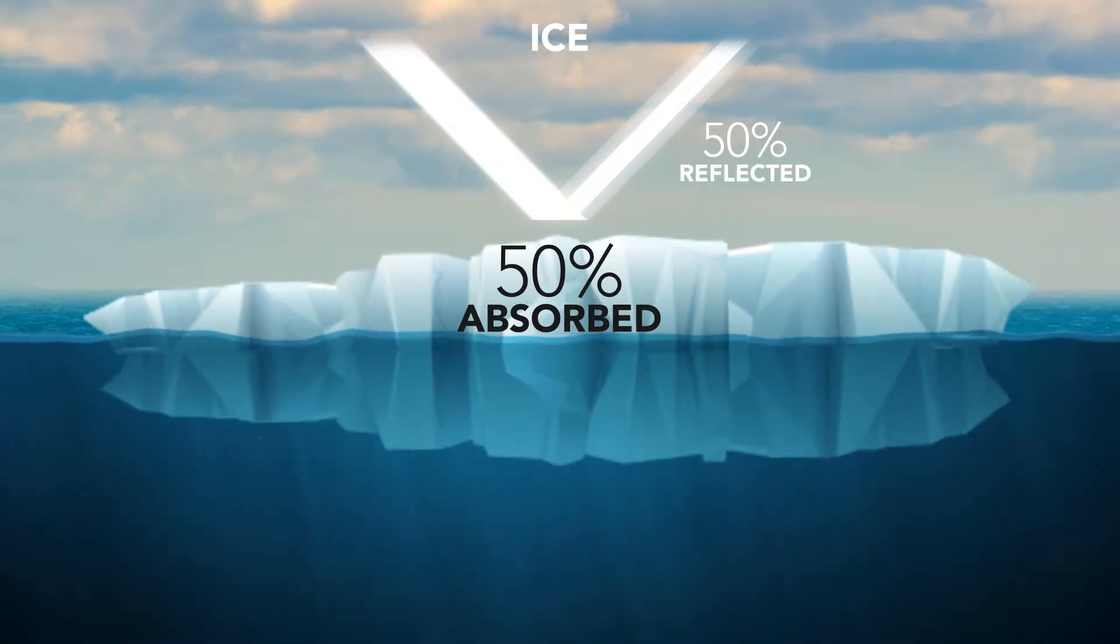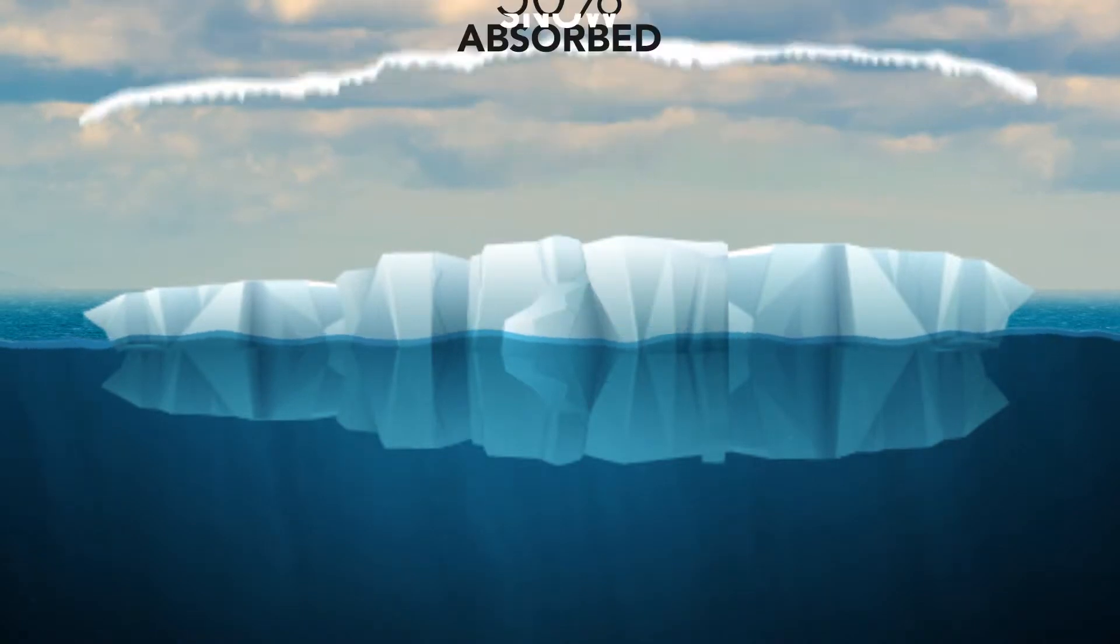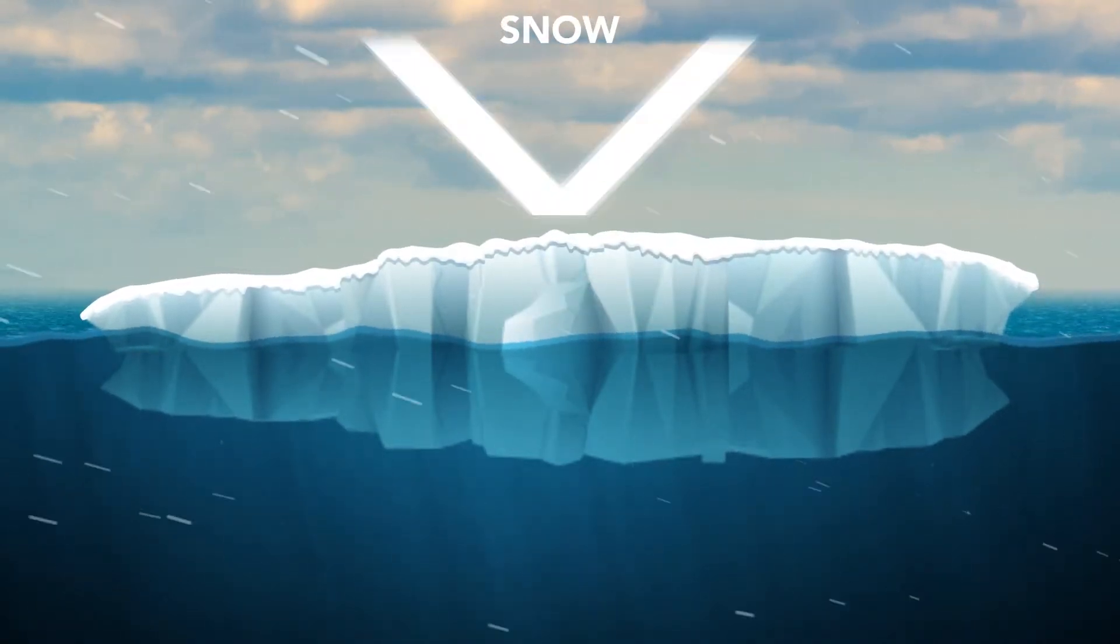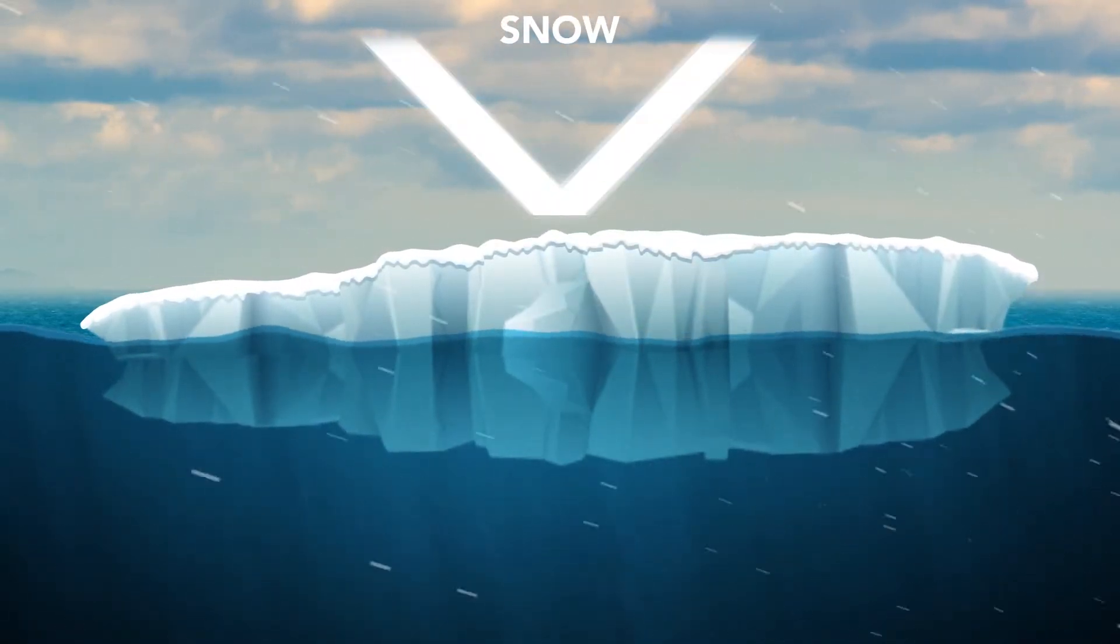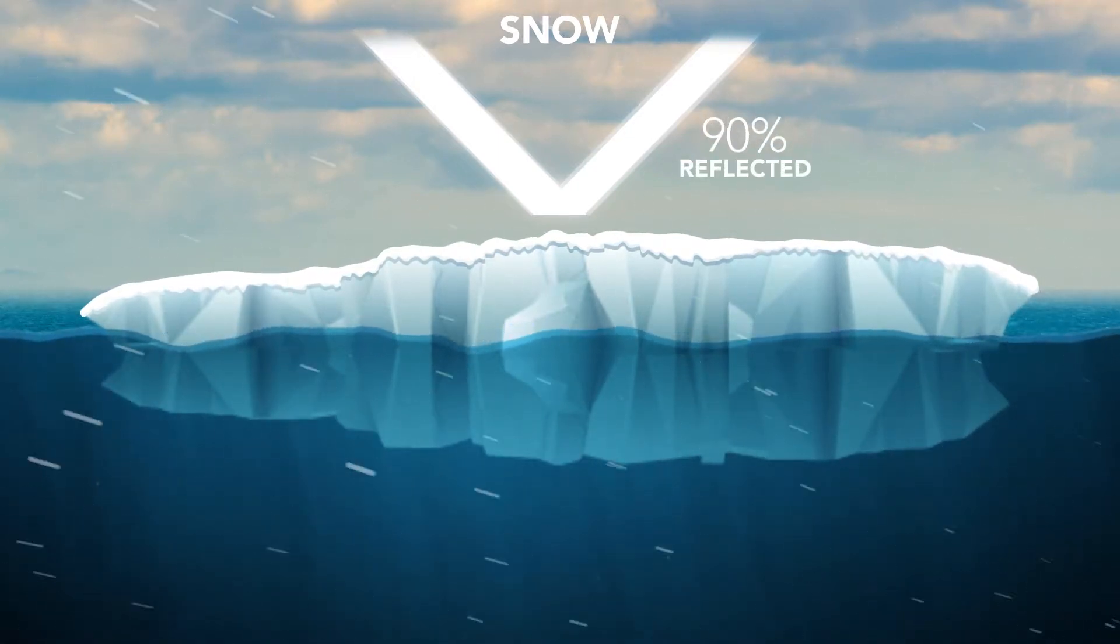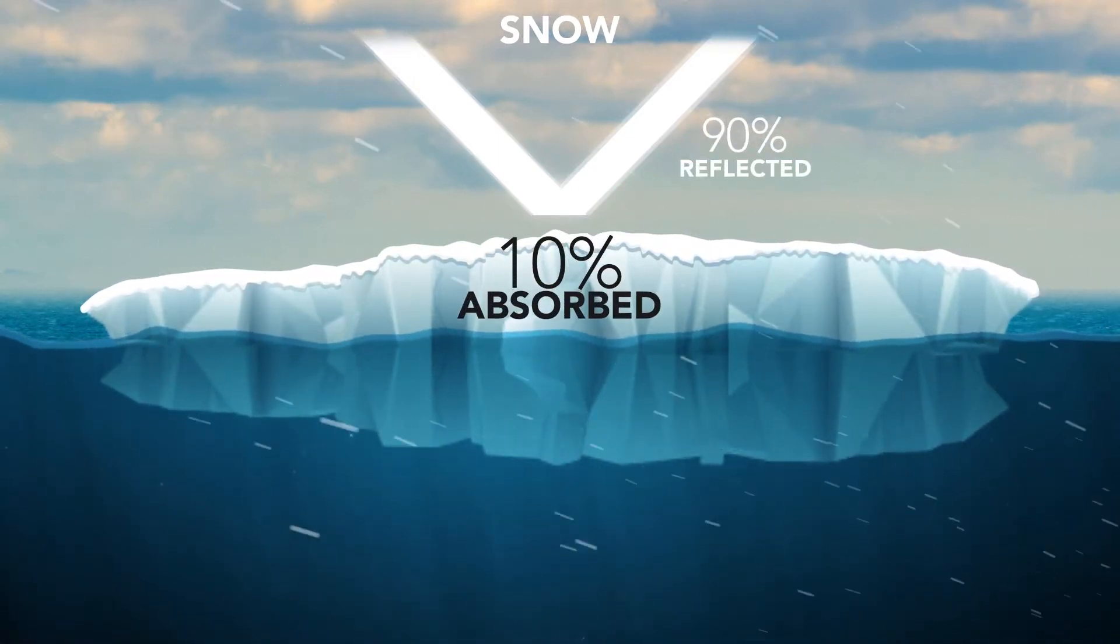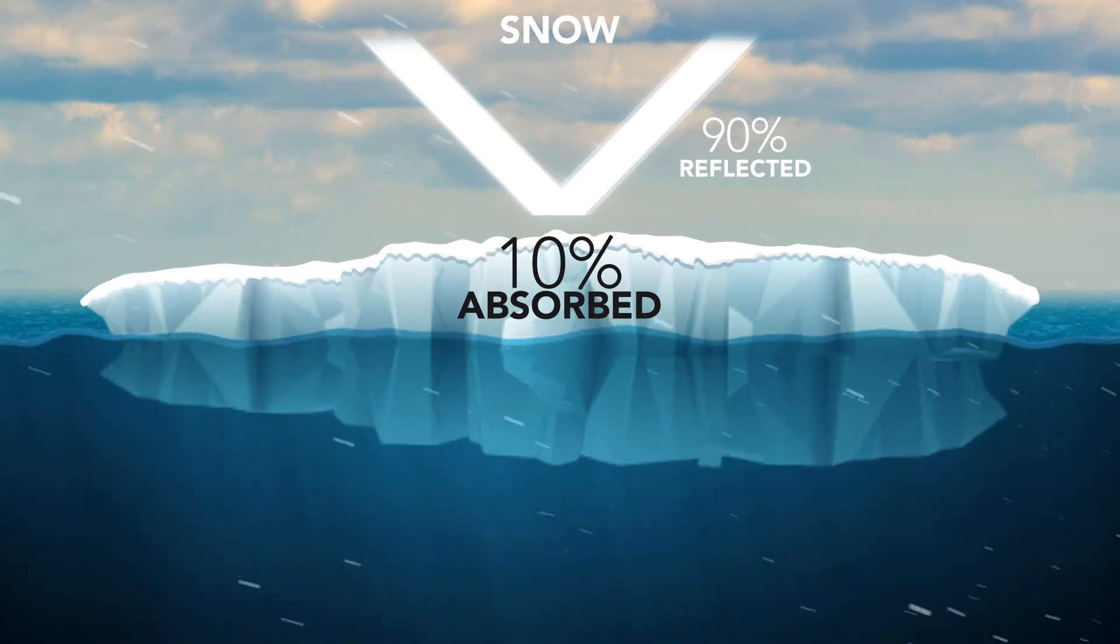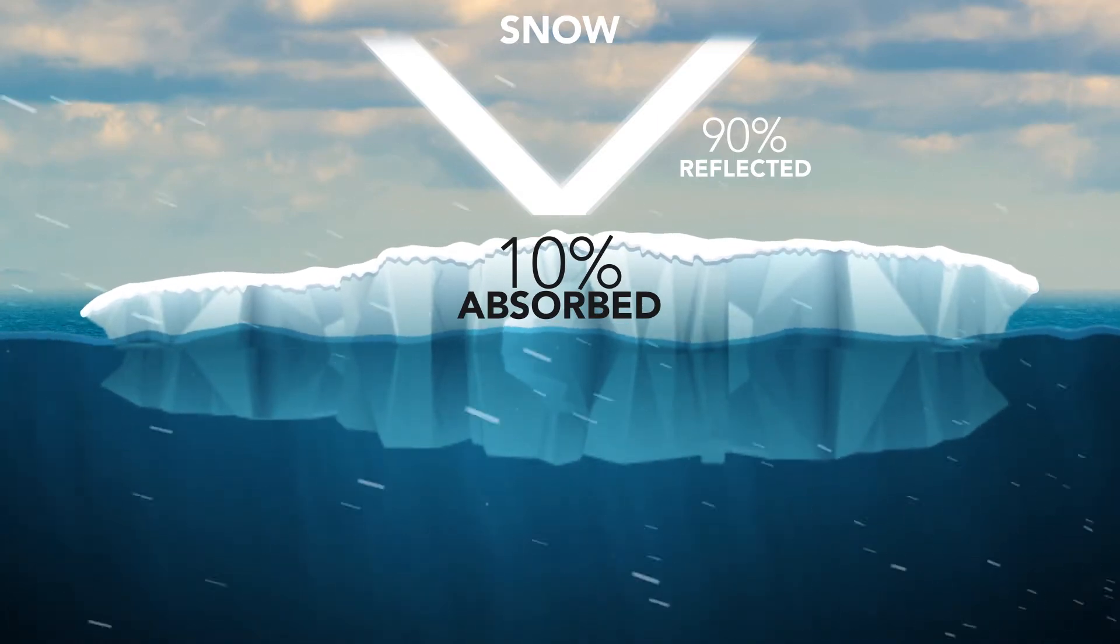So when the ocean is topped with sea ice, the ocean does not warm very efficiently. Snow is even more reflective than ice, so when sea ice has snow on top of it, which it usually does, it reflects about 90% of the sun's radiation, leaving only 10% to be absorbed into the ocean. So in this case, it's very difficult to heat the ocean.